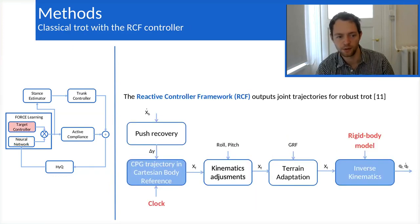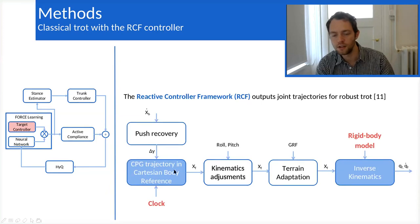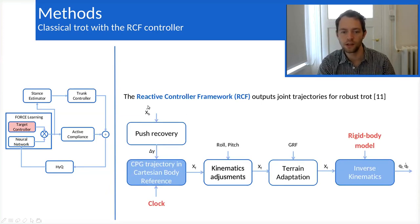To train this neural network, we rely on a supervised algorithm called FORCE. So we need a target signal. And in this case, we have used the reactive controller framework, which is documented here if you want to know more, to produce this target signal for the joint reference.